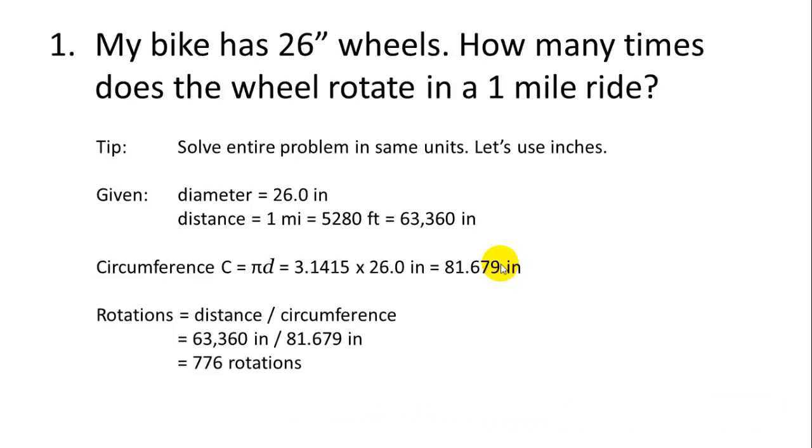So number of rotations is equal to the distance traveled divided by the distance the wheel travels in one rotation. Rotations equals distance over circumference or 63,360 inches divided by 81.679 inches. And that gives us 776 rotations. So that's a pretty simple problem. Let's look at problem number two.